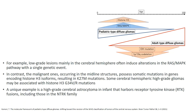The key genetic difference between pediatric and adult type diffuse gliomas: pediatric type diffuse low-grade gliomas show RAS-MAPK pathway alteration, whereas pediatric diffuse high-grade gliomas affect the histone H3 pathway, specifically H3-K27M or H3-G34RV mutations. This is unlike adult counterparts, which show IDH pathway mutations or 1P19Q co-deletions as seen in oligodendroglioma.